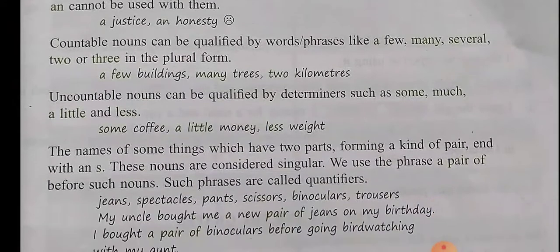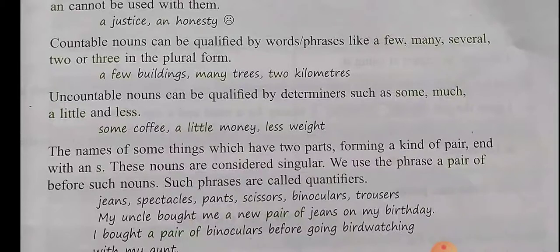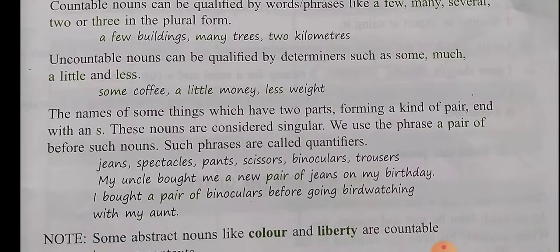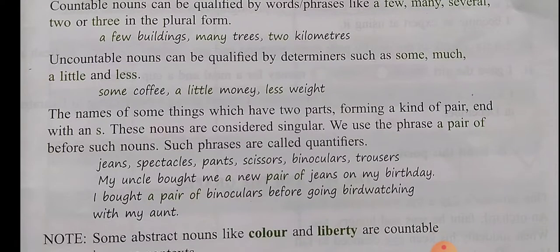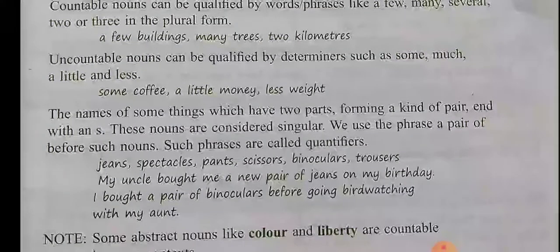Countable nouns can be qualified by words and phrases like a few, many, several, two or three in plural form. For example, a few buildings, many trees, two kilometres. Uncountable nouns can be qualified by determiners such as some, much, a little and less. For example, some coffee, a little money, less weight, etc.